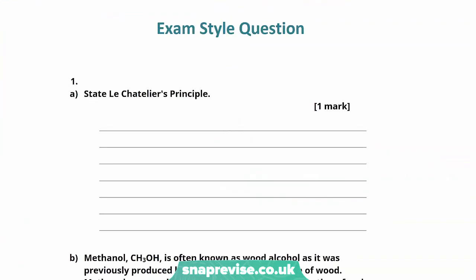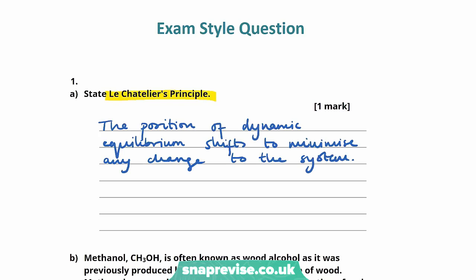Exam question one: State Le Chatelier's principle. Le Chatelier's principle states that the position of dynamic equilibrium will shift to minimise any changes applied to the system. This answer — that the position of dynamic equilibrium shifts to minimise any change to the system — gets us the one mark available.